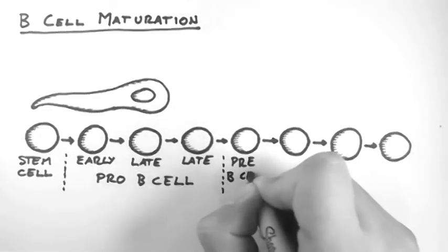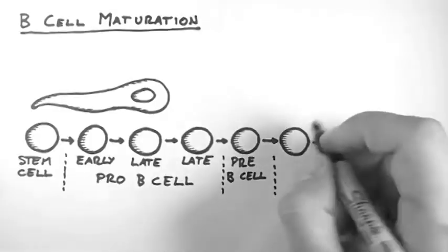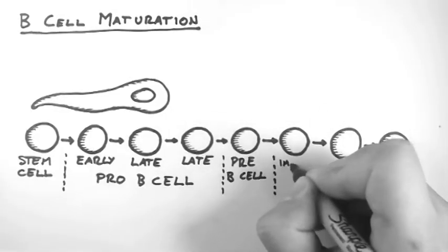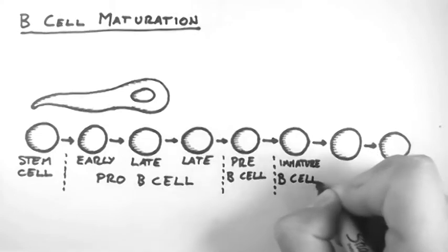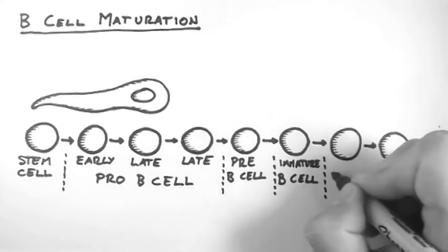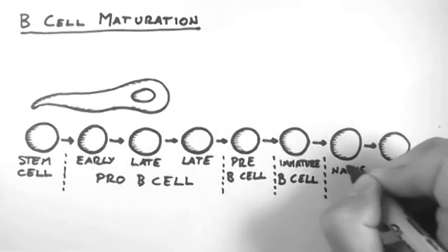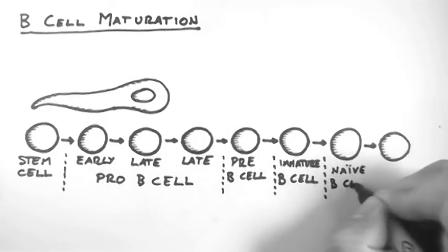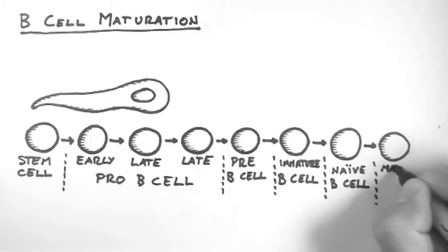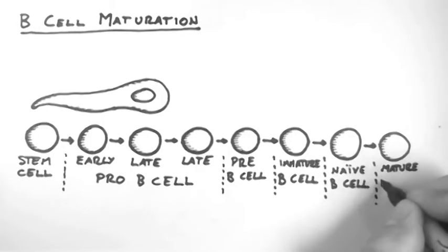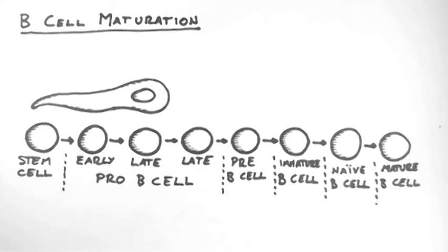These then progress to pre-B cells and then onto immature B cells. The immature B cells then migrate to lymph nodes, the spleen and other secondary lymphoid tissues. At this time they then progress to naive B cells and they eventually may become mature B cells.